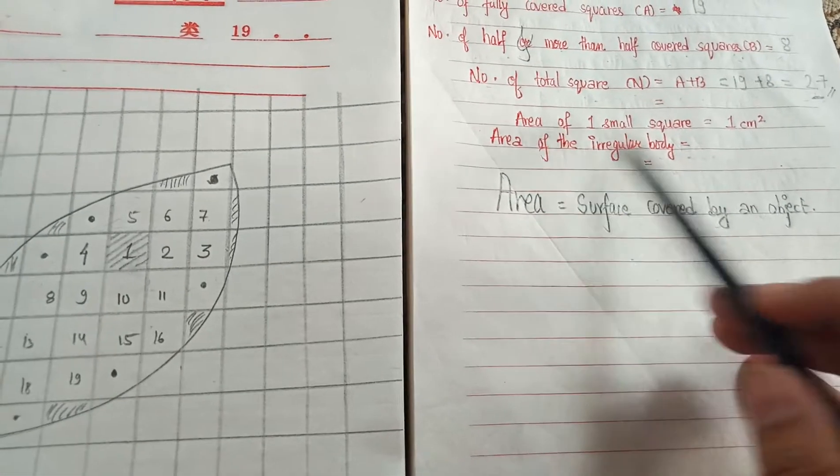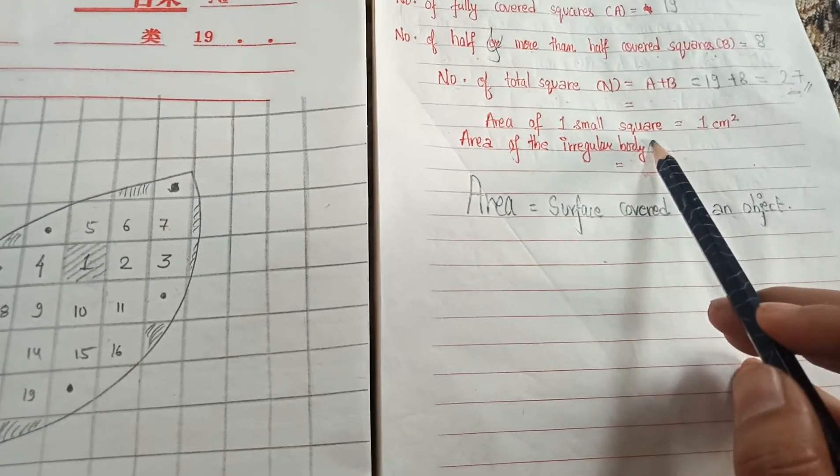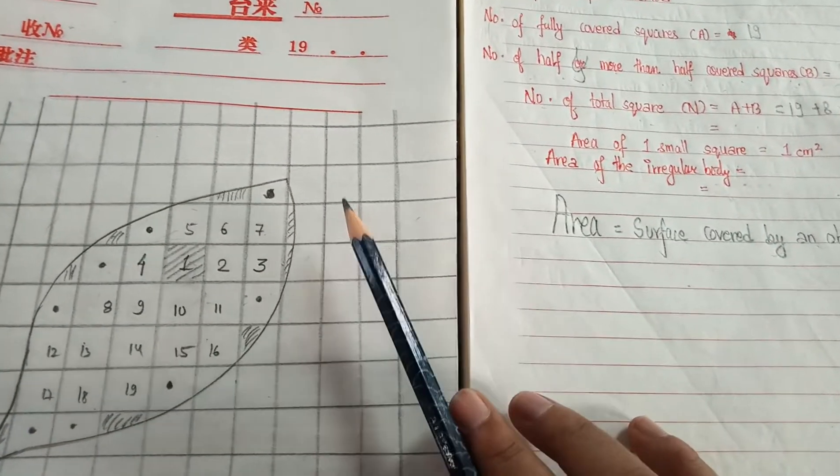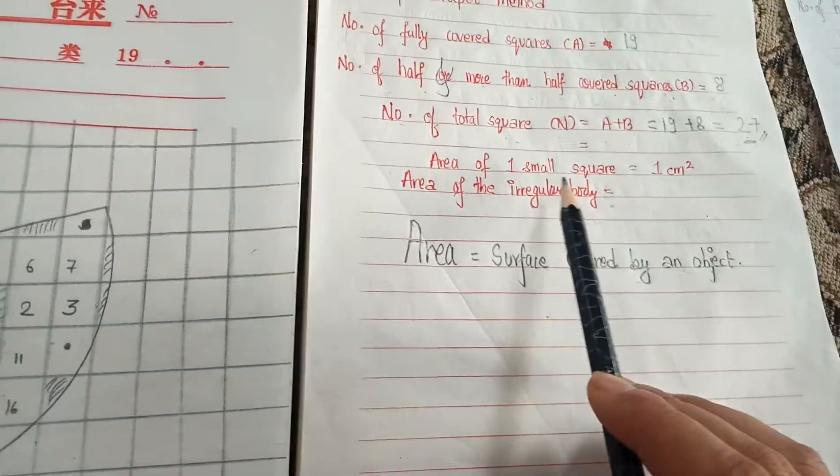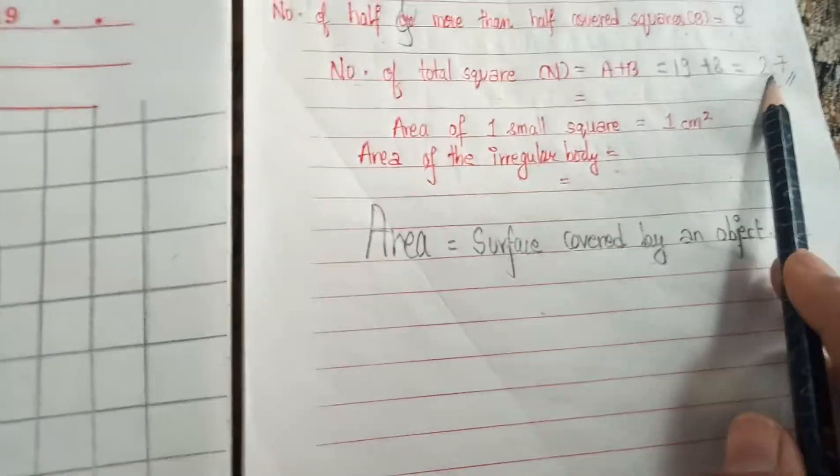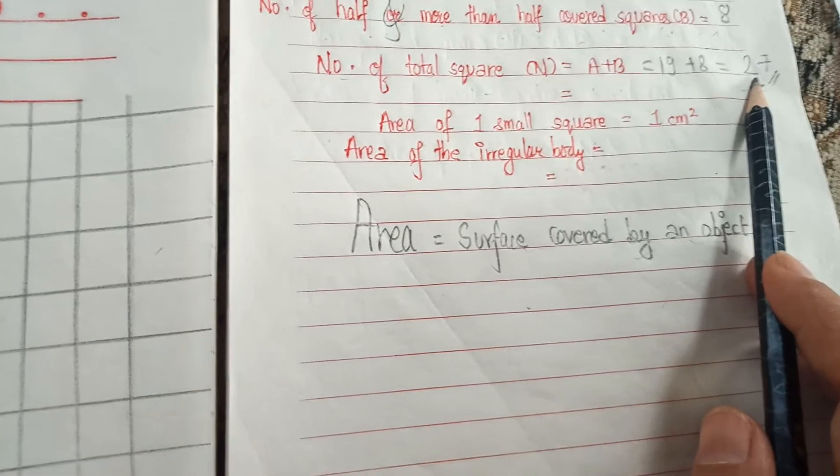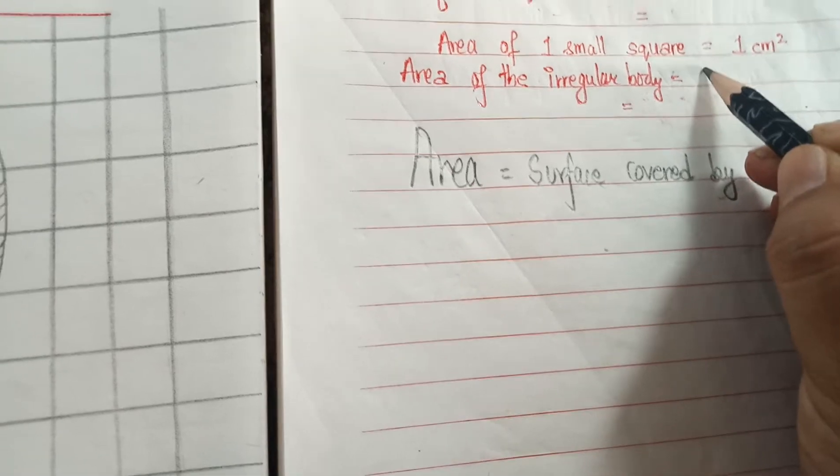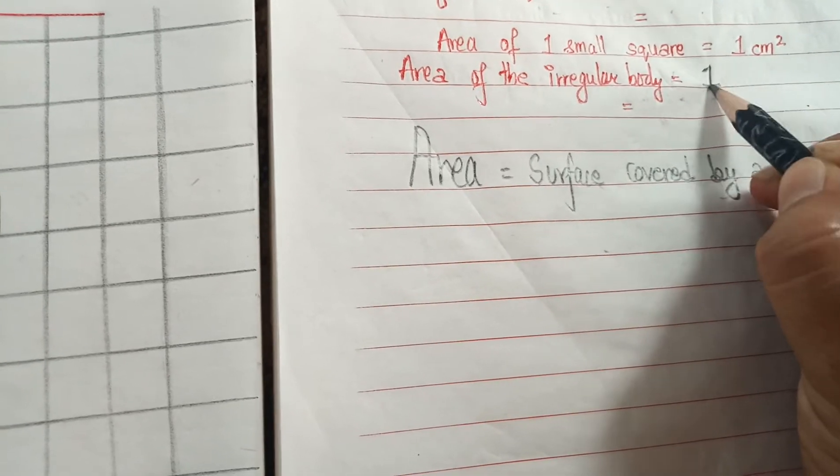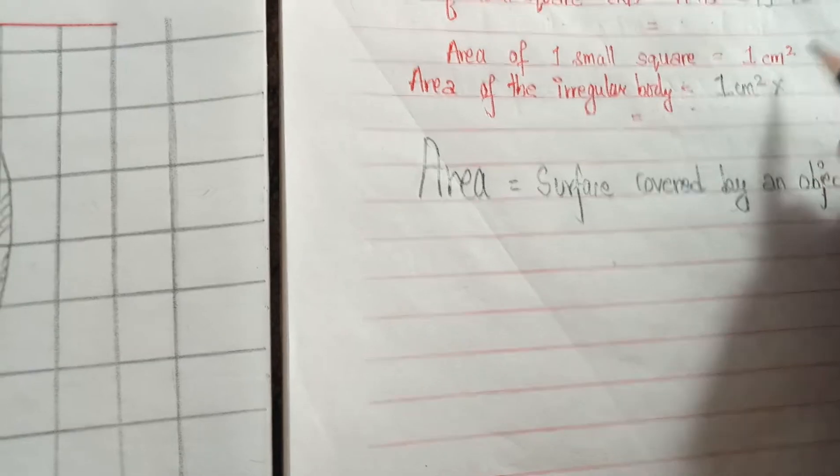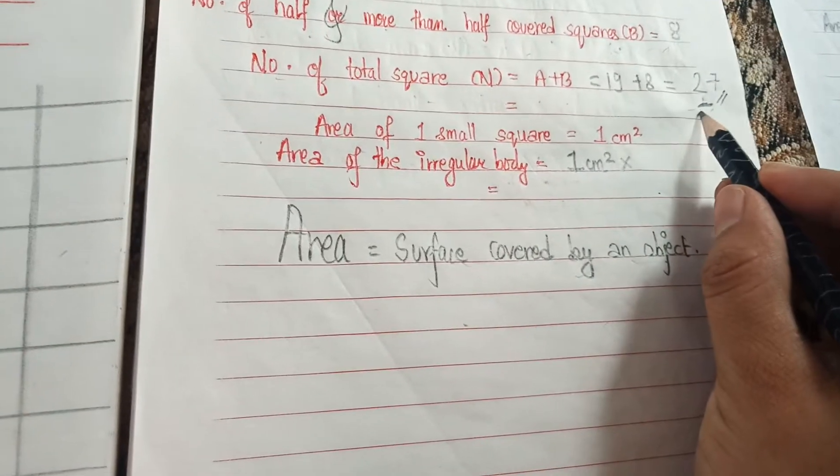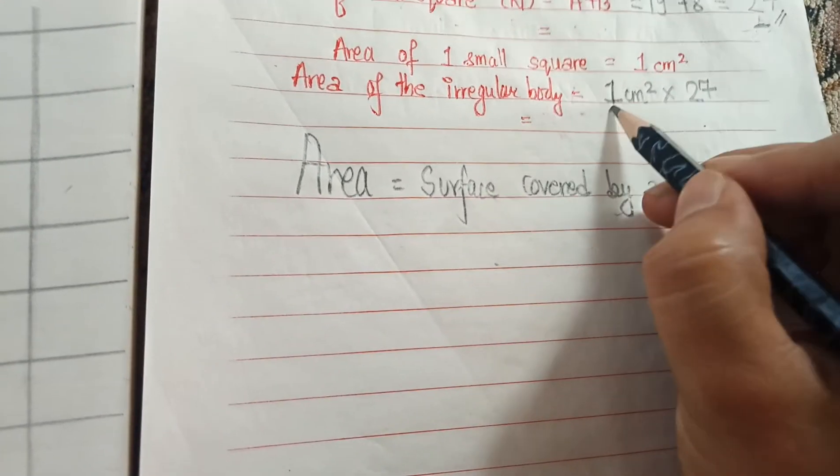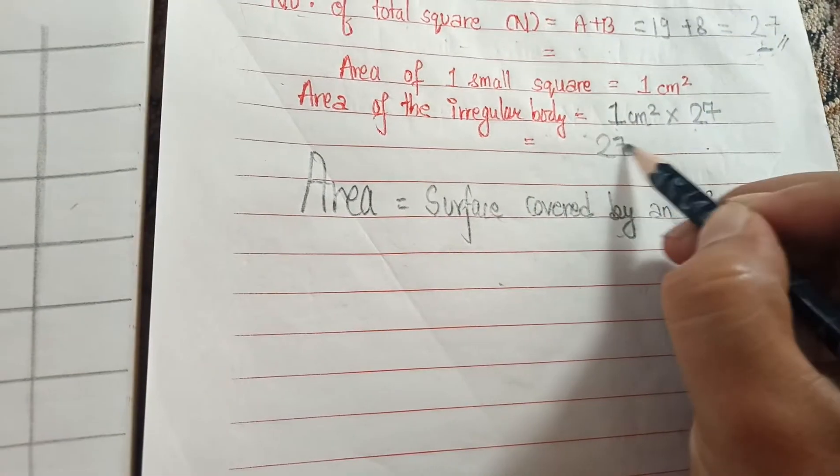We already know the area of one square. If we know the area of one square, can we know the area of 27 squares? Of course, you simply multiply. Area of one square is one centimeter squared, so for 27 squares, 1 times 27 is 27 centimeter squared.